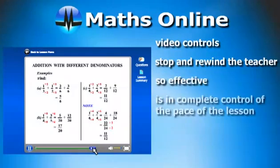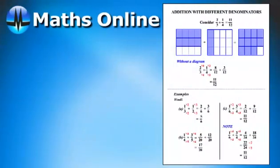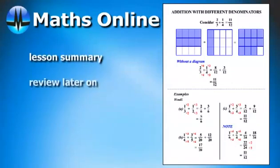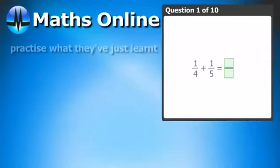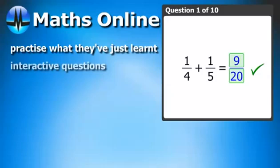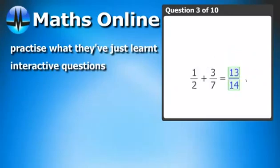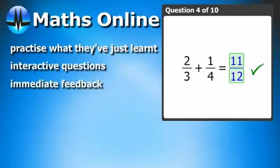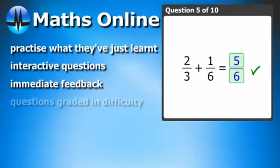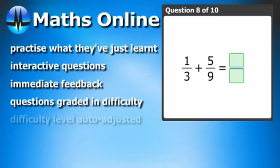Your child is in complete control of the pace of the lesson. When the lesson is completed, there is an option to print a lesson summary—excellent for keeping in a folder and reviewing later on. Then it's time to practice what they've just learnt. The interactive questions are designed specifically to reinforce what they've just seen and heard. These give the kids immediate feedback on their level of understanding. The questions are graded in difficulty, starting with the easier types, and as the kids show mastery at that level, the difficulty level is automatically adjusted.